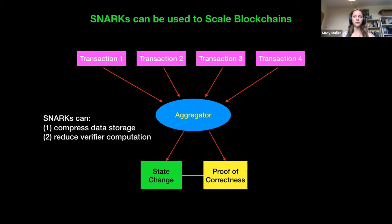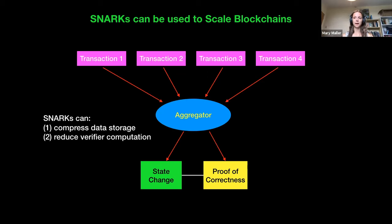One theme we're going to see a lot today is that SNARKs can be used to scale blockchains. With blockchains you have lots of issues to do with data storage and verifier time — all data has to be seen by all full nodes, and they have to check every single state transition. As proposed by several rollup projects, just one person sees lots of the transactions, computes what the state change will be, and then broadcasts the state change plus some proof that they have performed this action correctly.